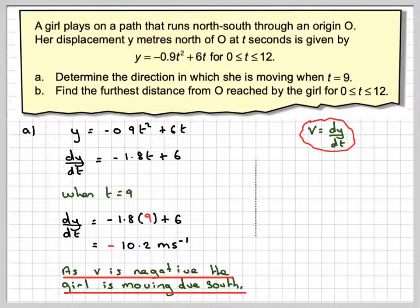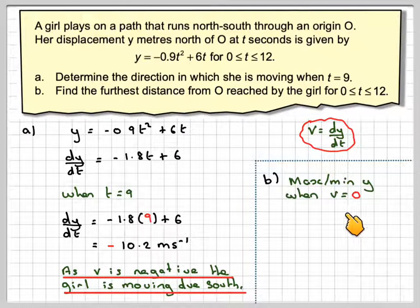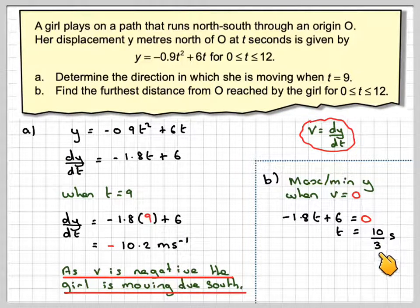We've already differentiated it. So the maximum of y happens when v equals 0. We take the velocity function, put it equal to 0, and solve. We're going to get t equals 10 over 3, which is 6 divided by 1.8.